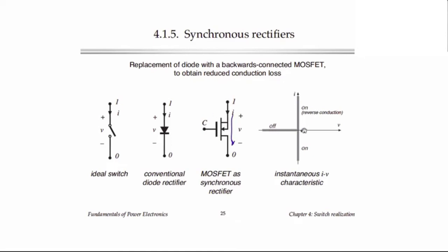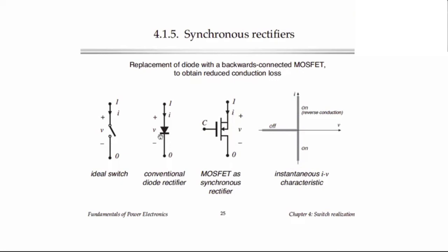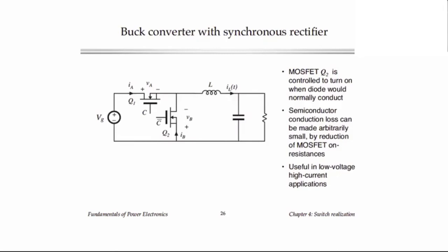With a MOSFET connected backwards, its instantaneous IV characteristic is essentially flipped — both axes are flipped because we've connected the MOSFET backwards. We take advantage of this part of the instantaneous IV characteristic to get a characteristic that works like a diode. To make this happen you need a control circuit that drives the gate to make the MOSFET turn on and off when the diode would have turned on and off. We can build a circuit to do that and get the MOSFET to work like a diode.